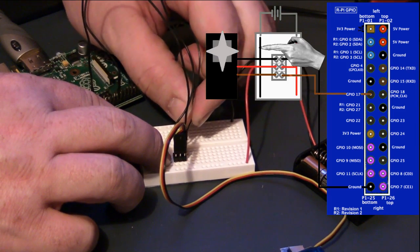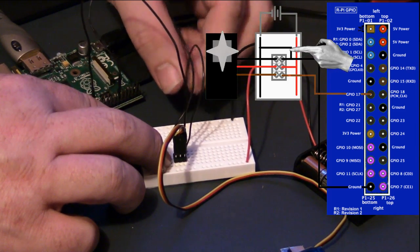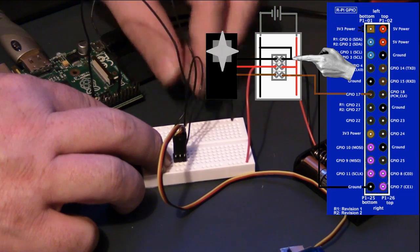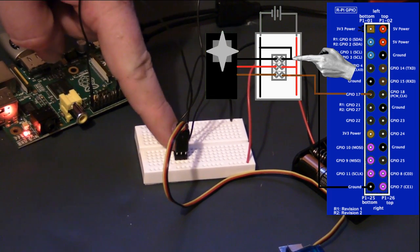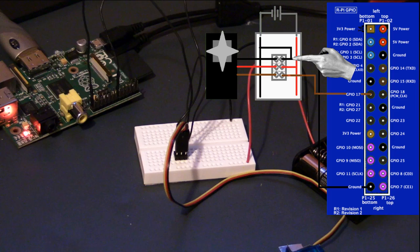Now I'll connect the negative from my power supply to the black wire on the servo motor, which is also conjoined with the ground on the Raspberry Pi.